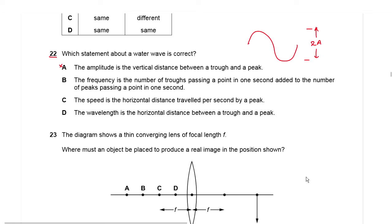Option B states the frequency is the number of troughs passing a point in one second added to the number of peaks passing a point in one second. However, the frequency is the number of waves passing a point in one second. To count the number of waves, we choose either the troughs or the peaks — not both. We do not add them. So option B is also incorrect.